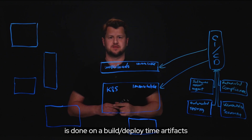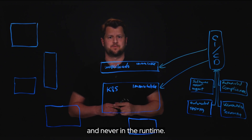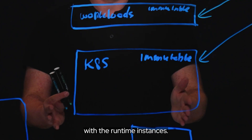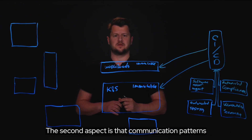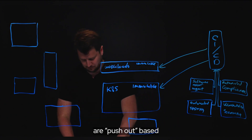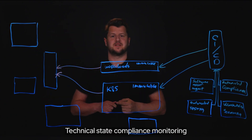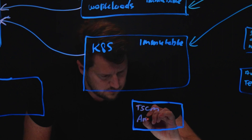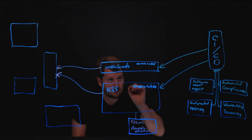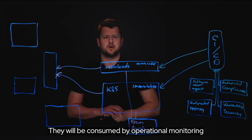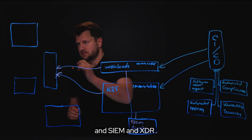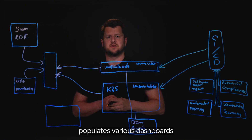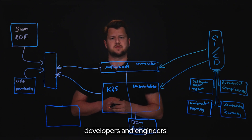This means all continuous scanning is done on the build and deploy time artifacts and never in the runtime. Only digest mapping between the different artifacts in CI/CD is done to correlate the findings with the runtime instances. The second aspect is that communication patterns around all types of monitoring are push-out based. Technical state compliance monitoring and anomaly detections are part of the platform, and events are pushed out to be consumed by operational monitoring, SIEM, and XDR.